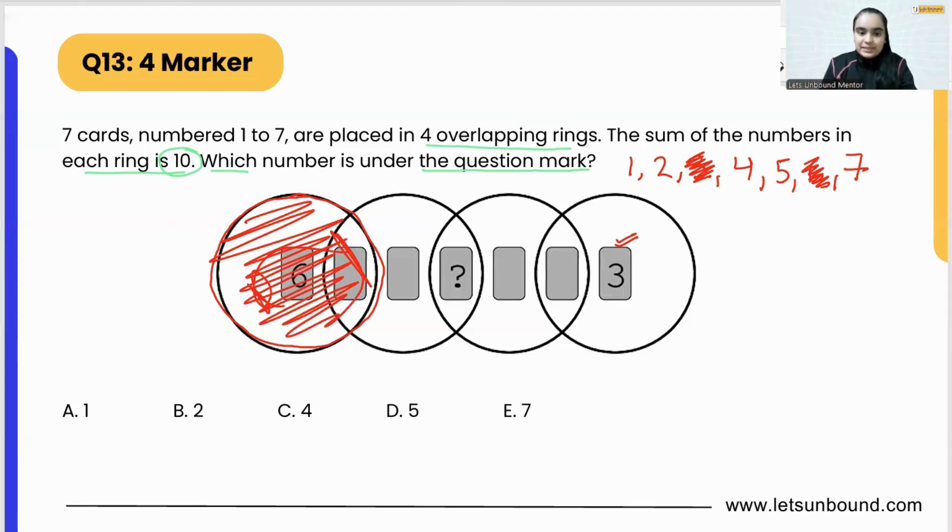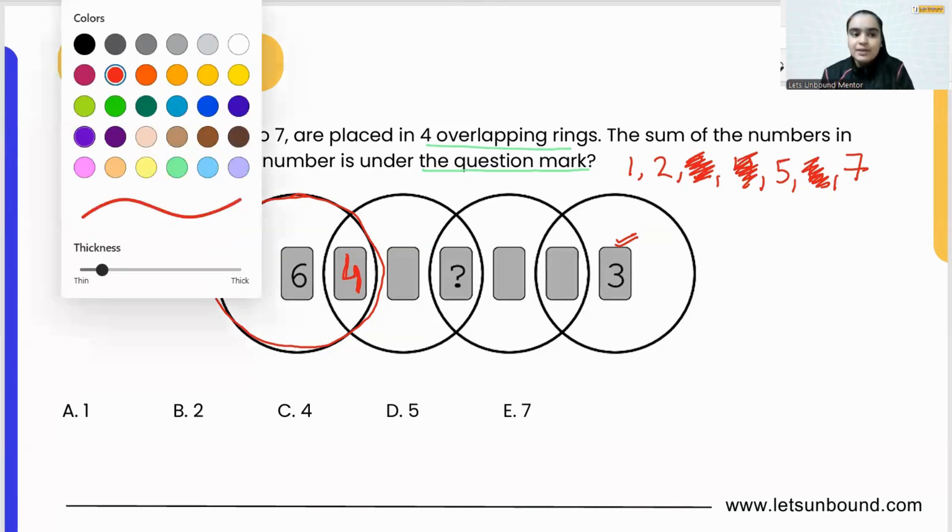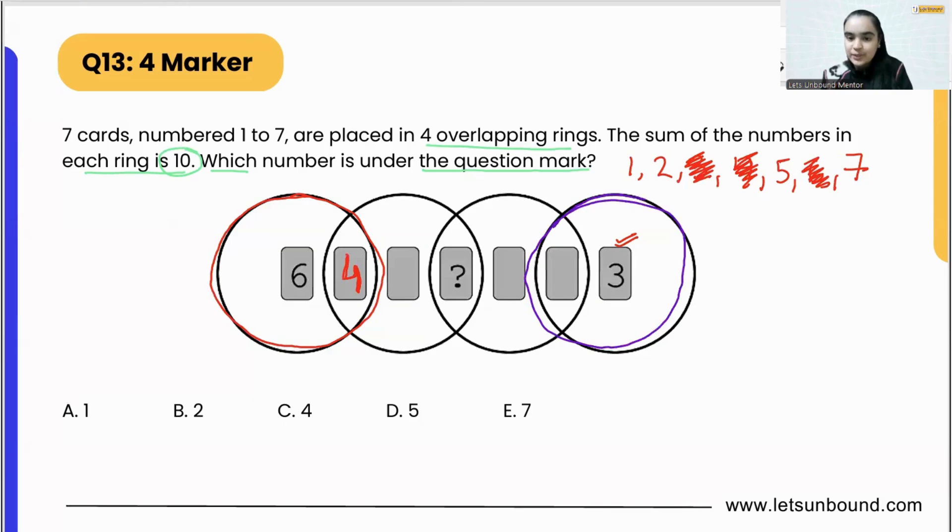Now the first ring is this one which is having only two placed cards, 6 and something. Now what they have given us in the question? The sum of numbers in each ring is 10. So that means 6 plus something has to be 10. What should we add to 6 to get 10? Yes, it will be number 4. So we have added number 4 over here. That means 4 is also gone. Now what I will do, I will go to the last ring, this one.